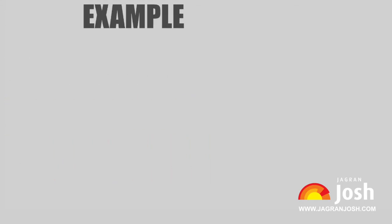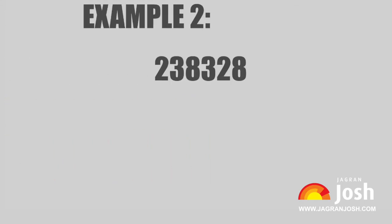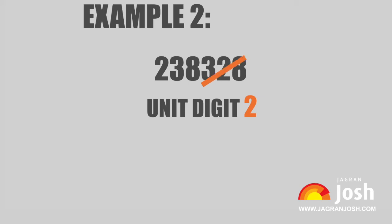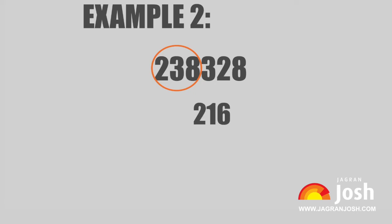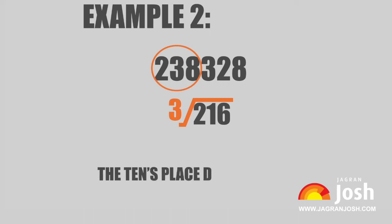Another example. Let us now find the cube root of 238,328 with the same method. The unit digit will be 2. Now strike off the last three digits of the given number. Find the nearest cube of the first three digits from the left, that is 238. The nearest cube is 216. Now, 216 is the cube of 6. Therefore, the tens place digit will be 6. So the answer is 62.